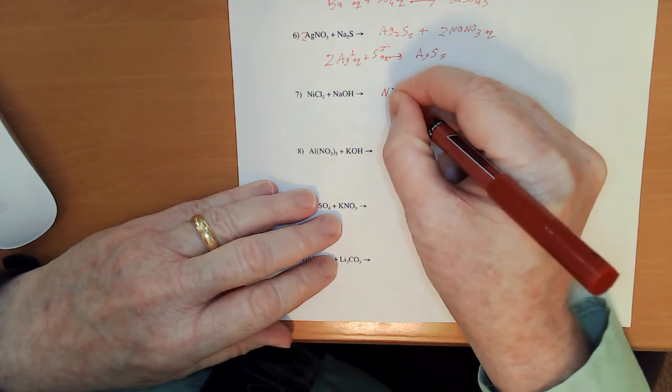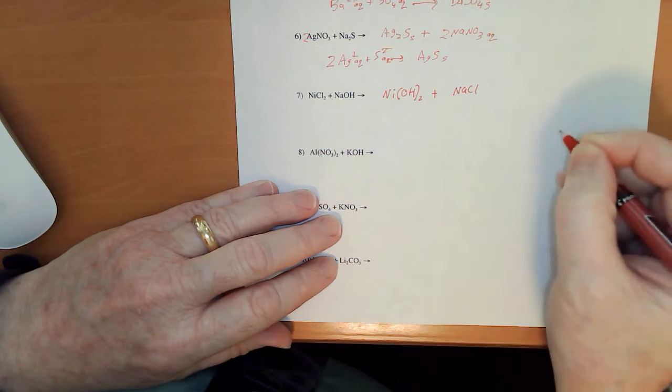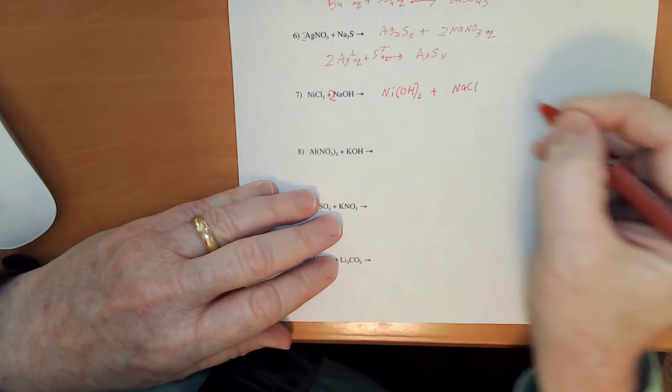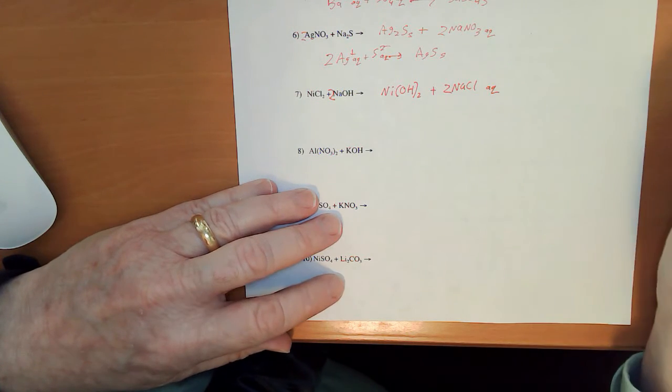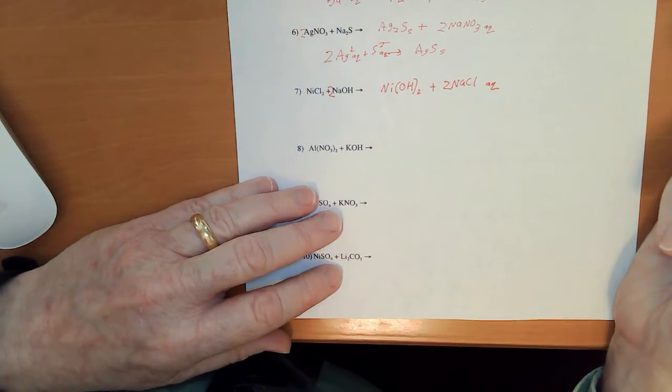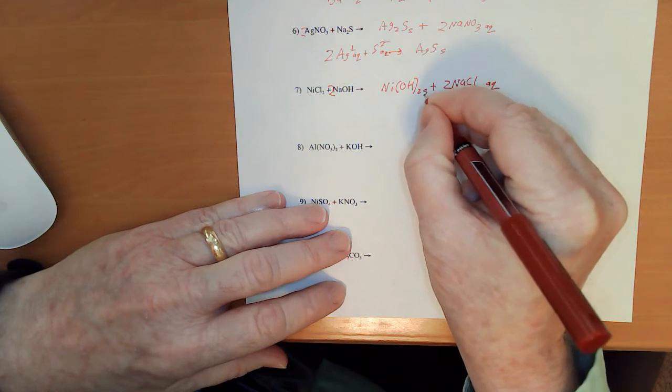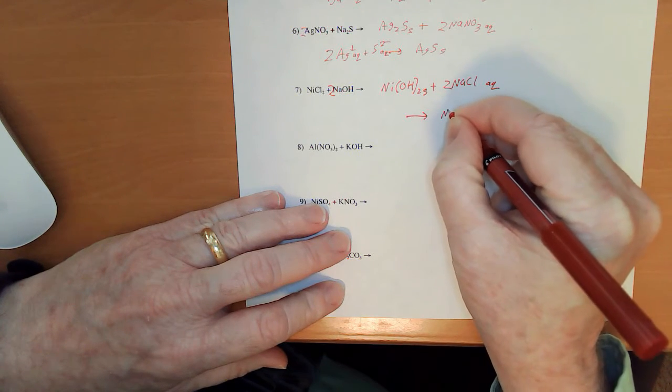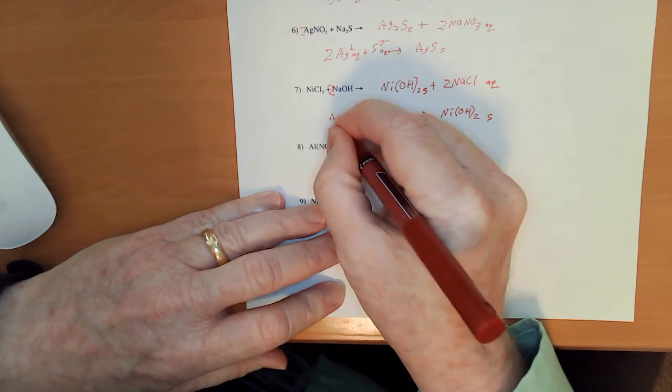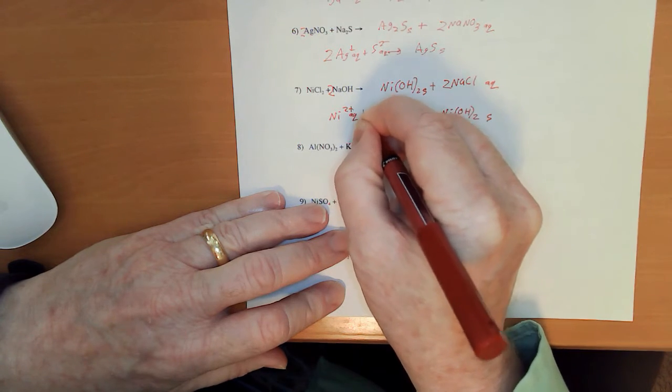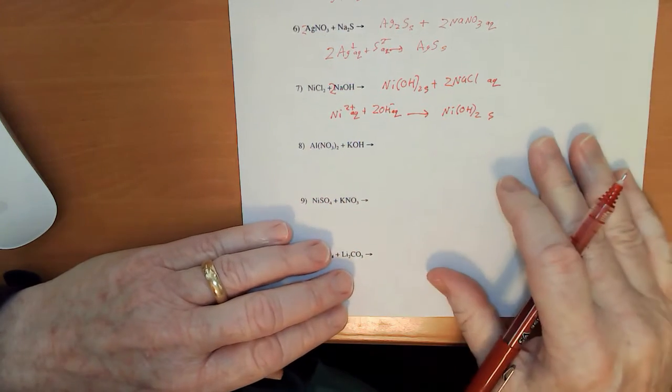Number 7. Do a partner exchange. Ni OH sub 2 and NaCl. I'm going to balance by putting a 2 there. I'm going to put a 2 there. Group 1 makes this one aqueous. Hydroxides are typically soluble with group 1 and group 2, but nickel is a transition metal. So we're going to call that the solid. That gives us Ni OH sub 2 solid. What goes into that? Nickel 2 plus aqueous. 2 OH minus aqueous.